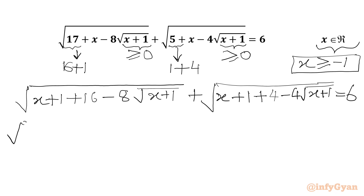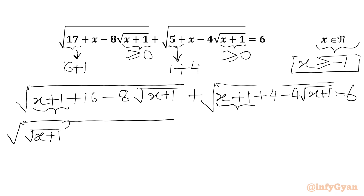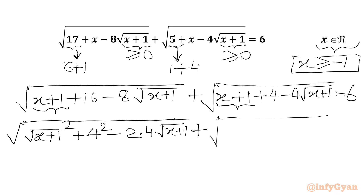Now we can write x plus 1 in both the radicands. This will be square root of x plus 1, and then we put it to the whole power 2 — square root and square cancel, we get x plus 1. So x plus 1 plus 16 is 4 squared, minus 8, which we can write as 2 times 4, times square root of x plus 1. Then similarly square root of x plus 1 whole square, and 4 is square of 2, minus 4 is 2 times 2, times square root of x plus 1. RHS is 6.